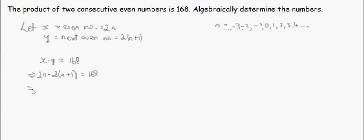So that implies then that 2n times 2(n+1) is equal to 168. And that will give us 4n times (n+1) is equal to 168. And that will mean then if we divide both sides by 4, we will get n times (n+1) is equal to 42. Now if I expand out this bracket, I will get n² + n = 42.